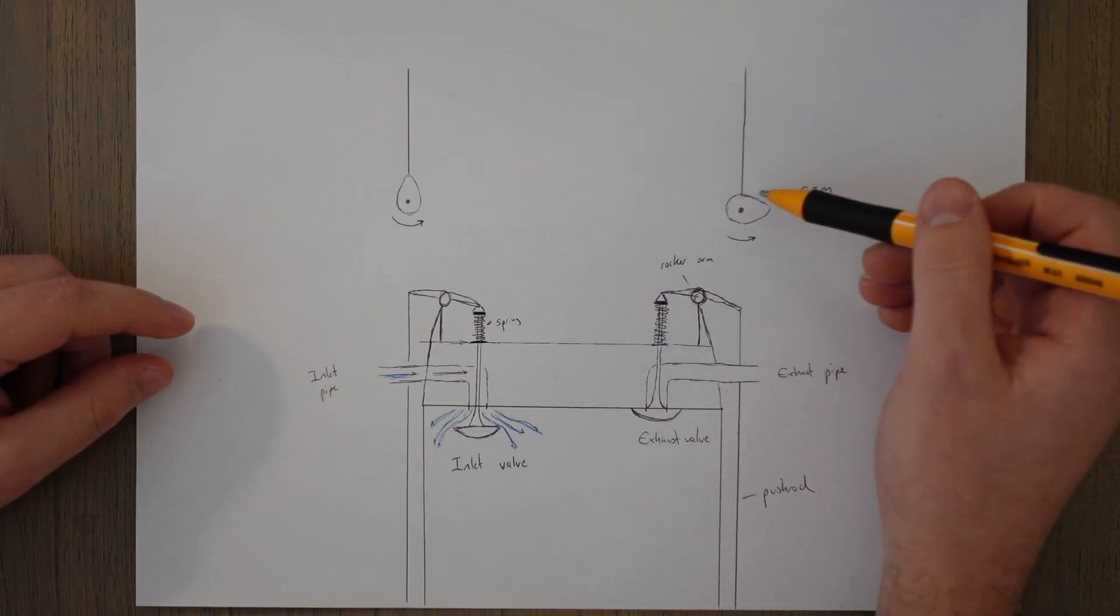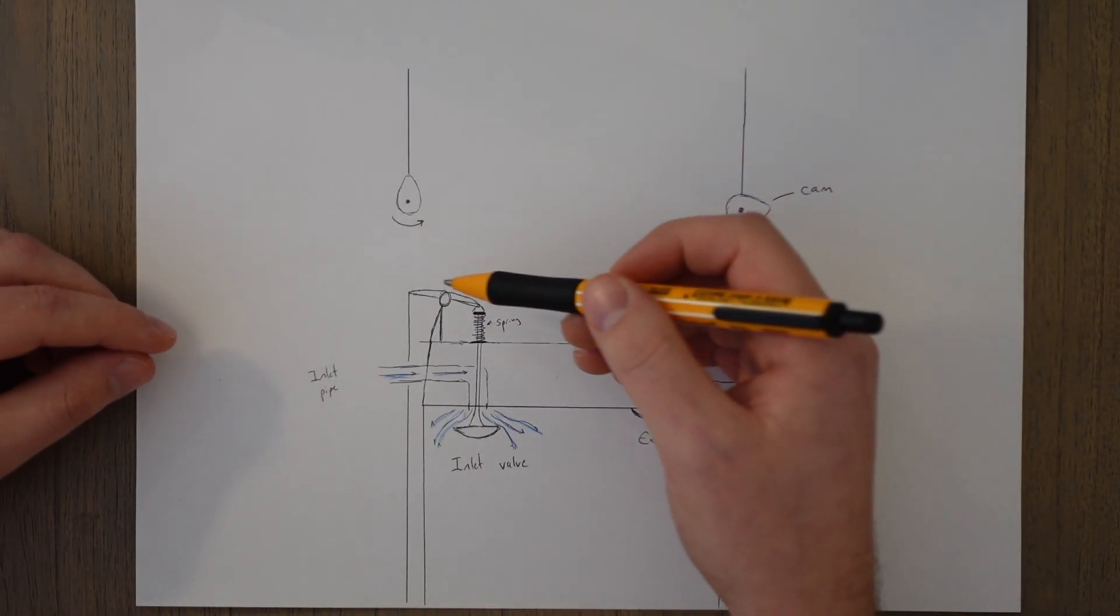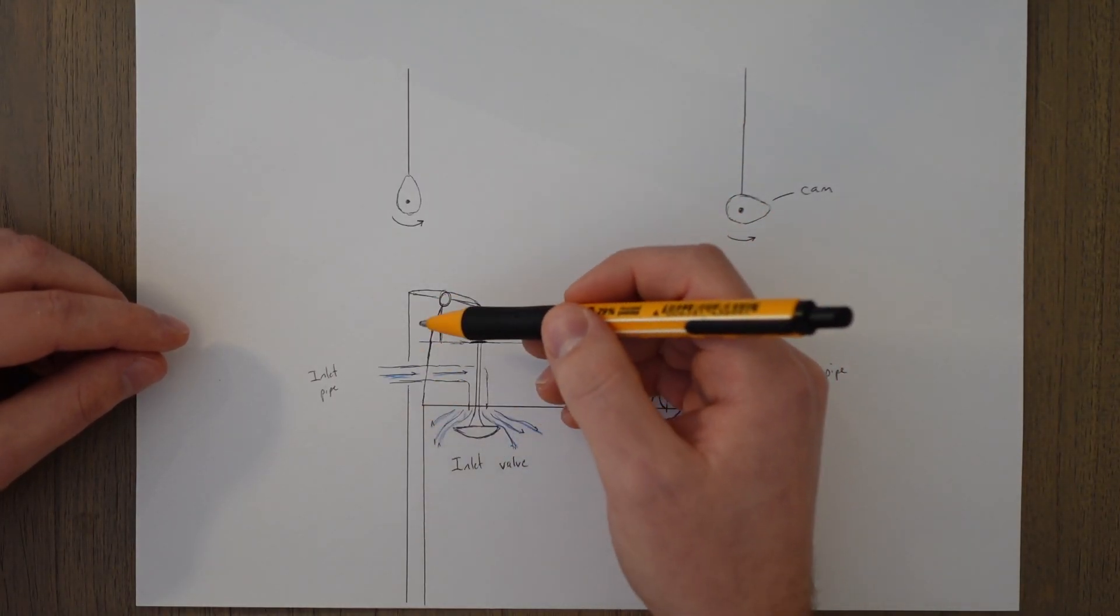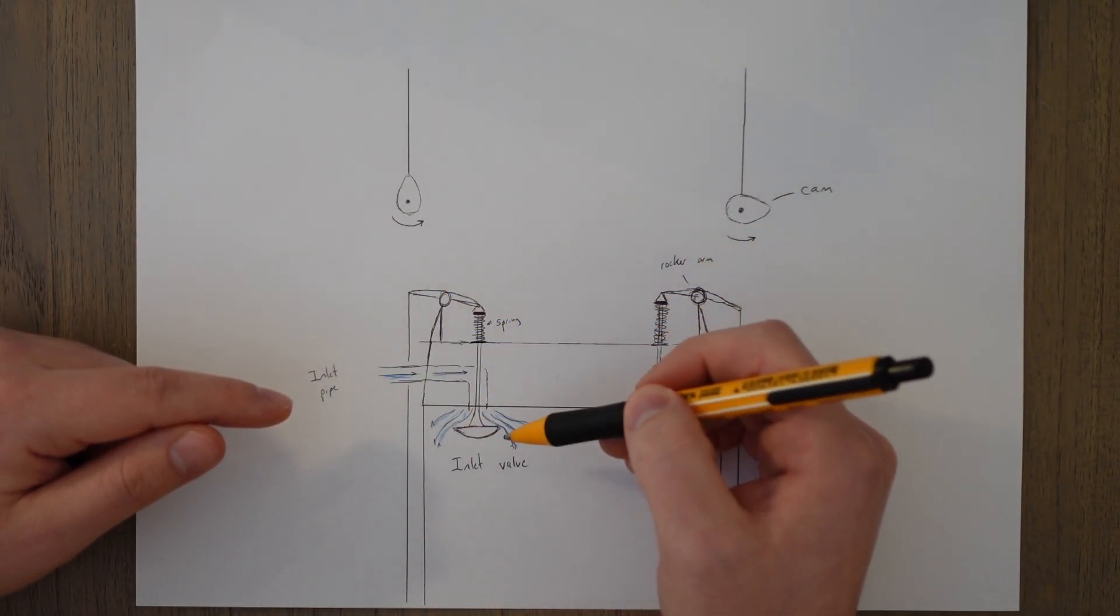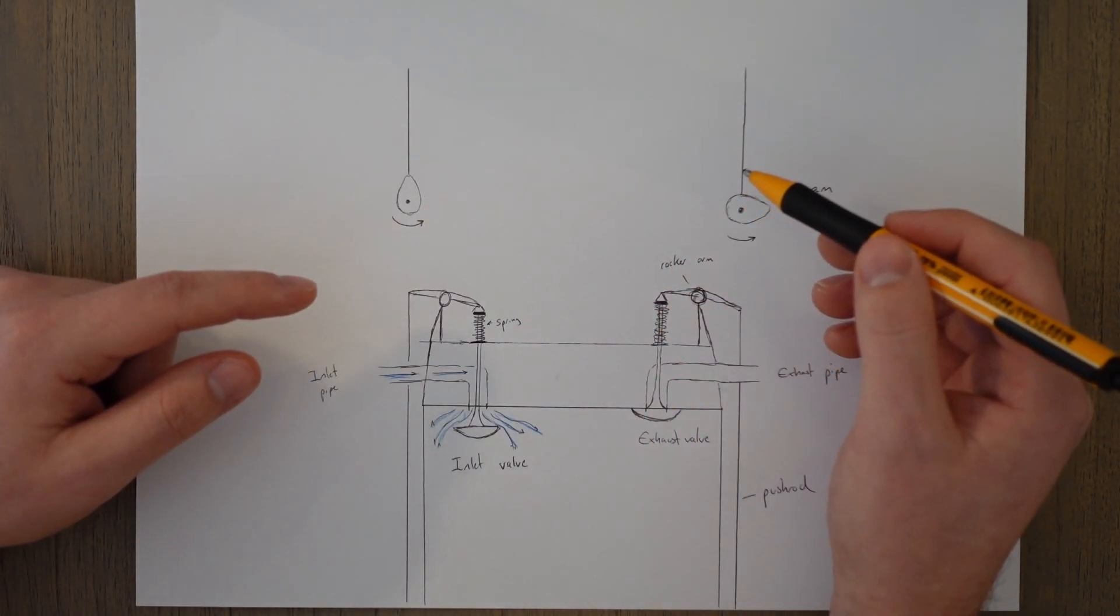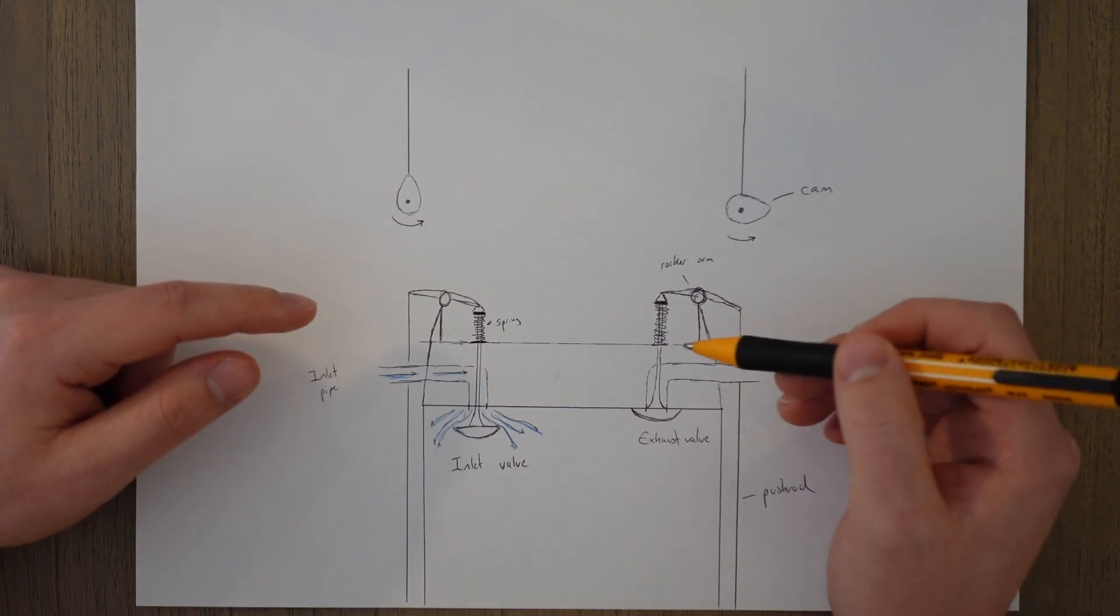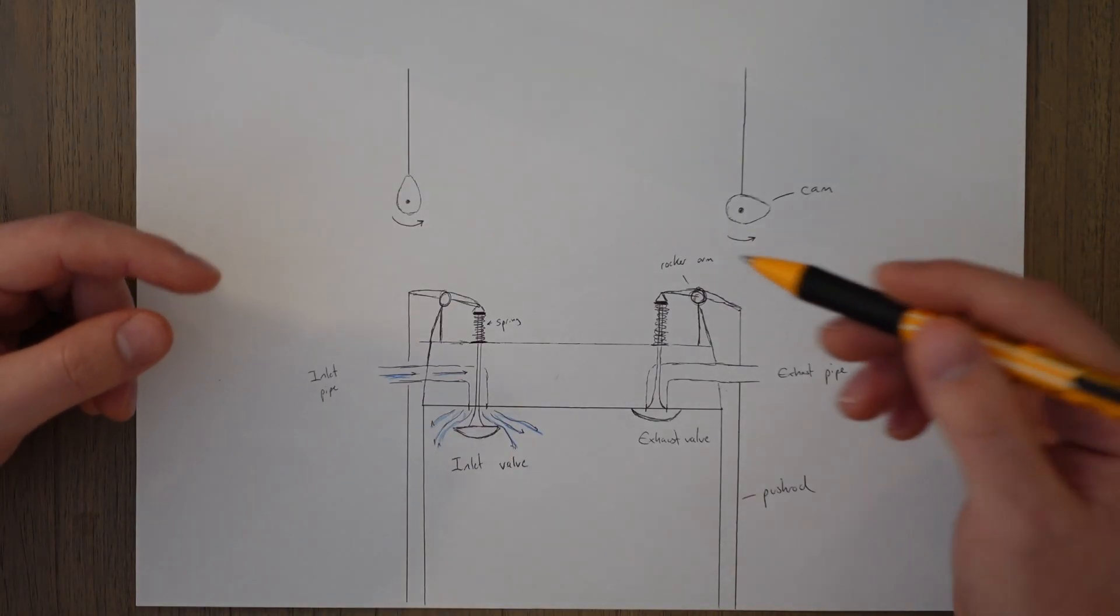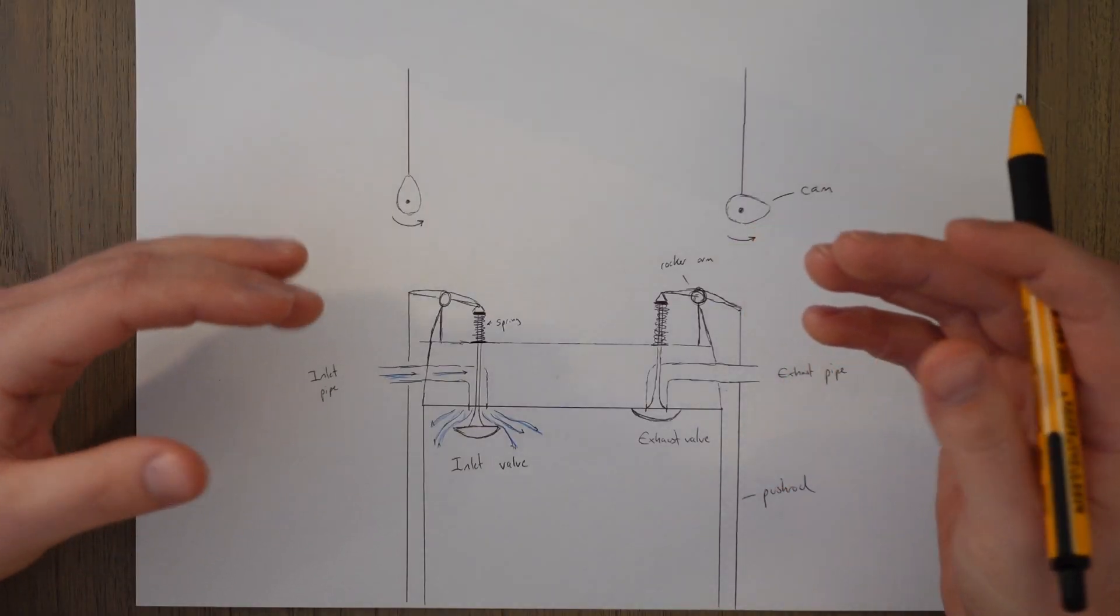Basically, what you've got is sort of a round pointed circle—an egg shape. When the egg reaches the top of the cycle, it'll push the push rod and it'll go over the rocker arm, push the valve down, allowing air to flow in. Then as it continues its rotation, the connecting rod will fall down and the spring will push it back down in order to close the valve again.